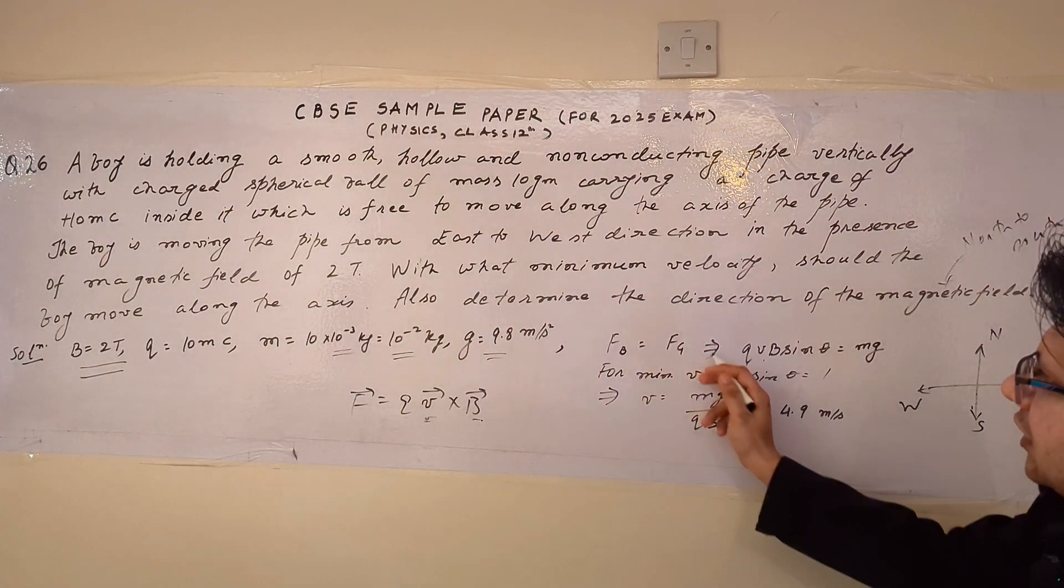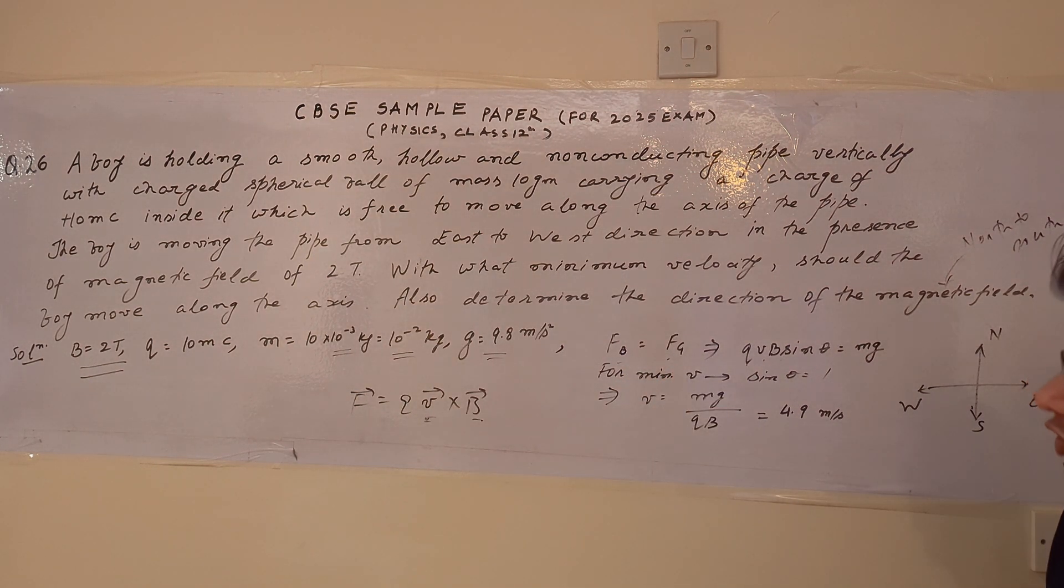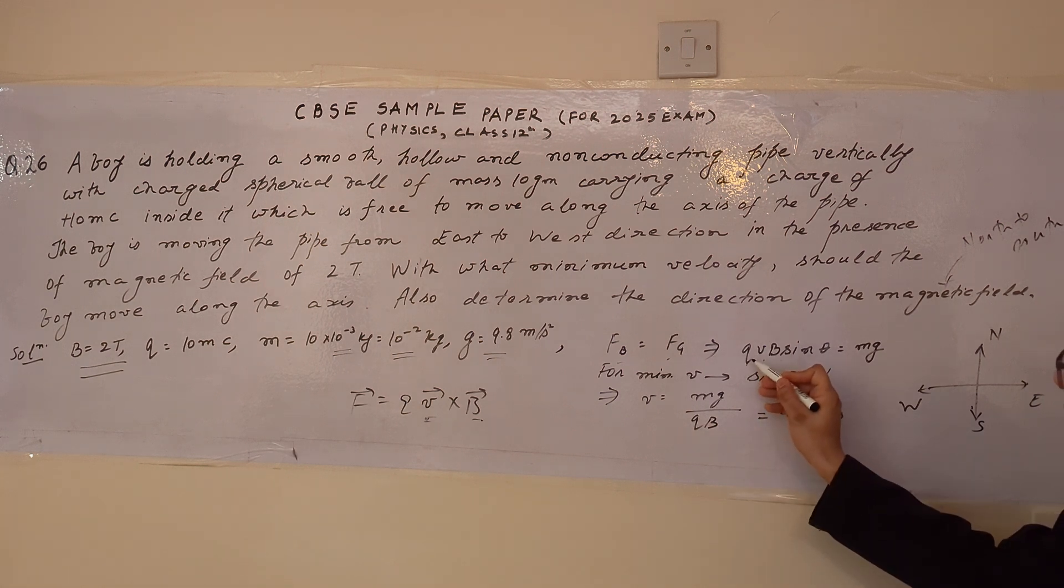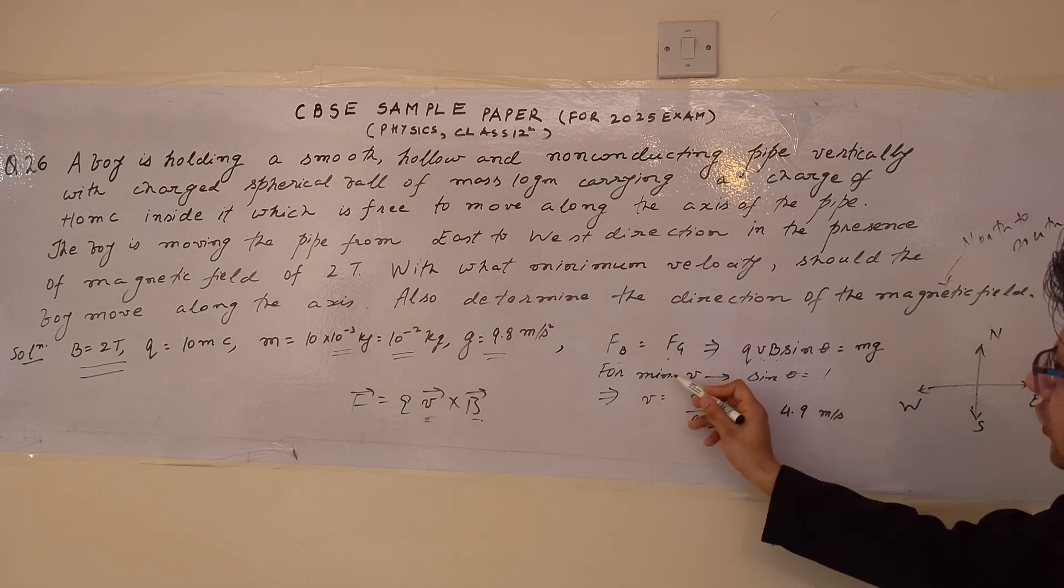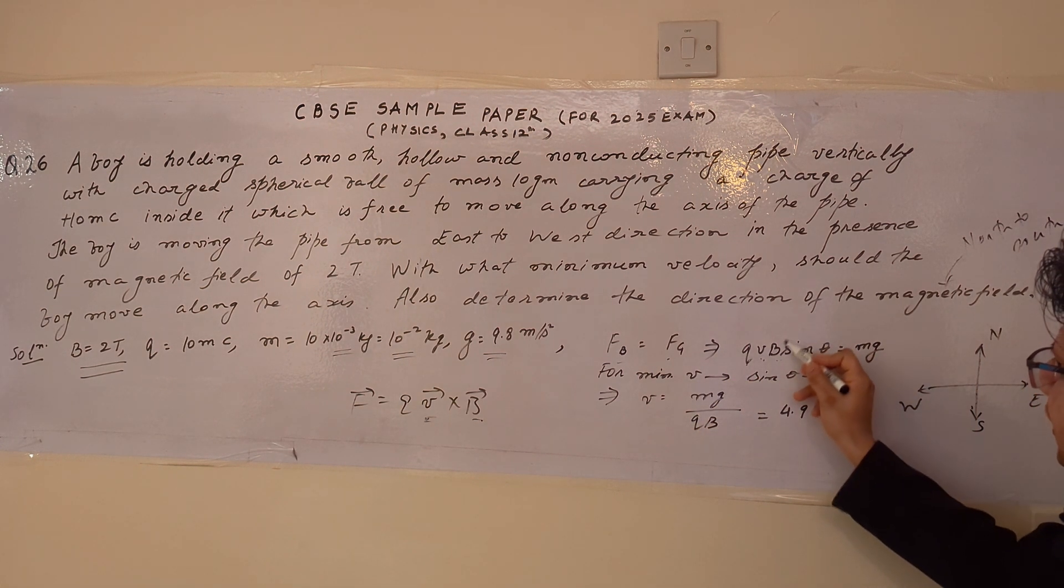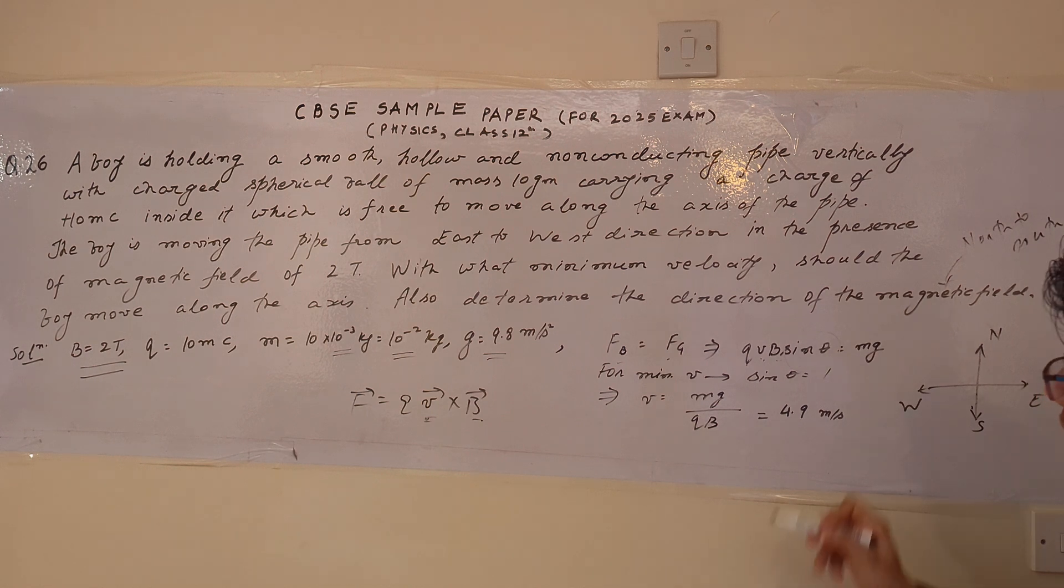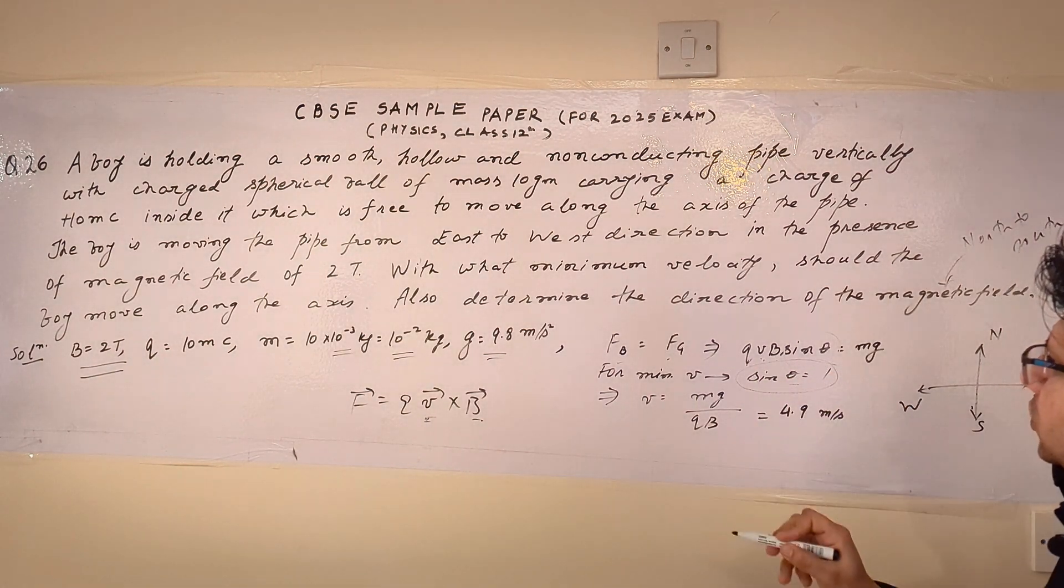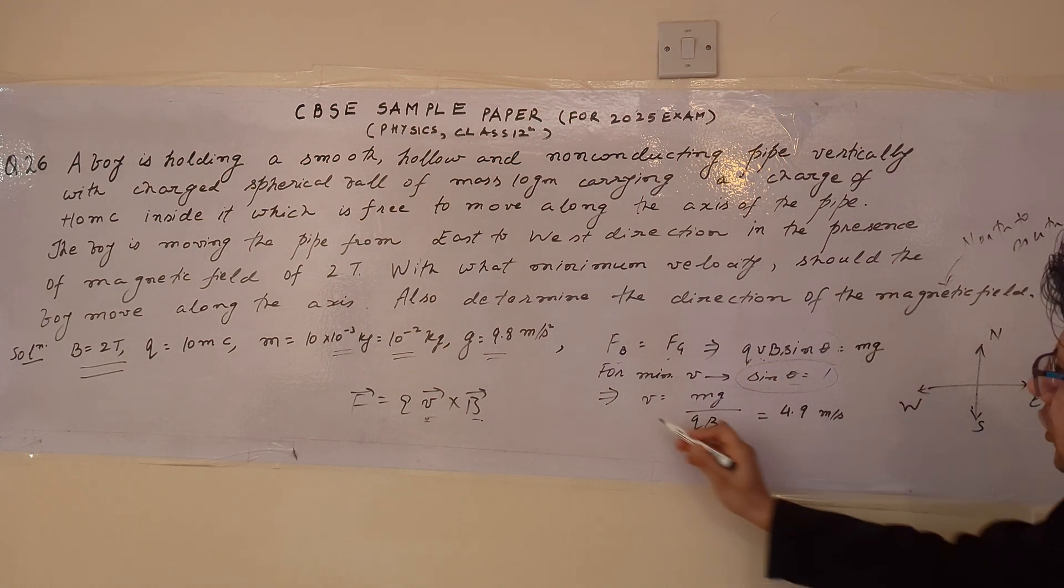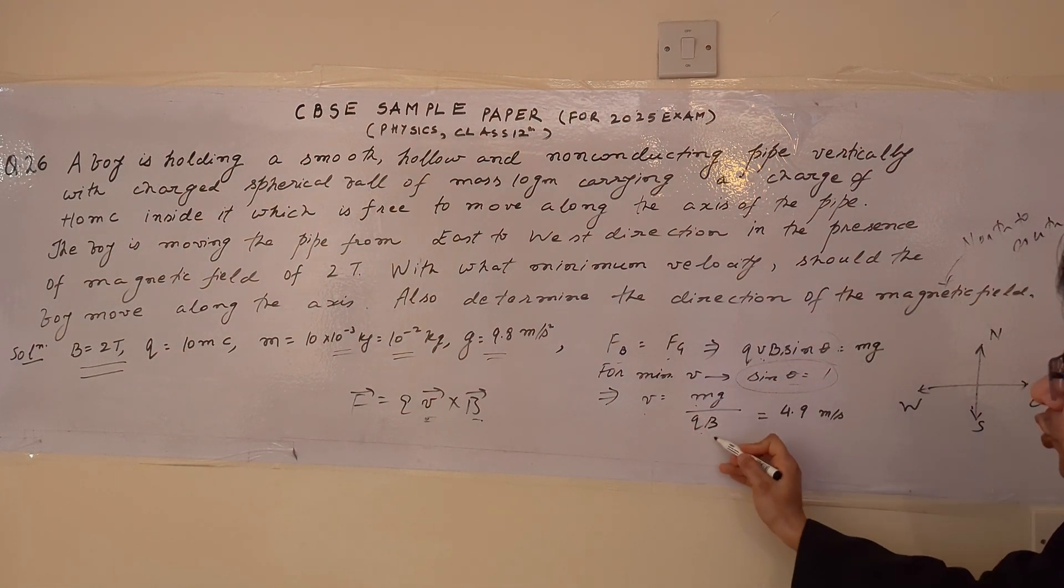For the first part of the problem we have to balance the magnetic force and the gravitation force. So magnetic force is Q V B sin theta, it is equal to mg. Now for the velocity to be minimum, this sin theta should be maximum, and sin theta is maximum when theta is 90 degree and the value of sin 90 degree is 1. So from this equation V equals to mg upon Q B.